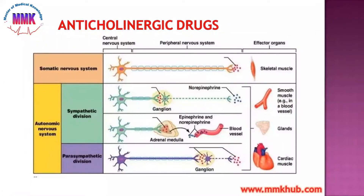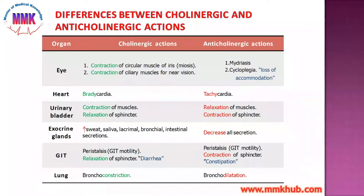As you may remember from the last lectures, our central nervous system has been divided into two types: somatic nervous system and autonomic nervous system. Last class we covered cholinergic drugs, so here we will do a quick revision before moving to anticholinergic drugs.